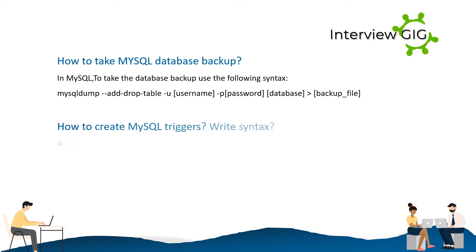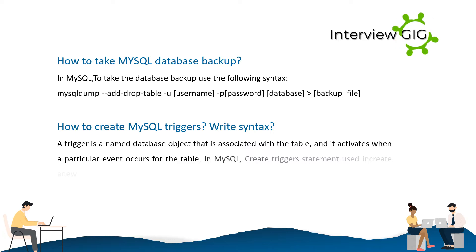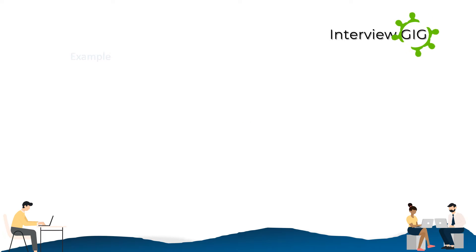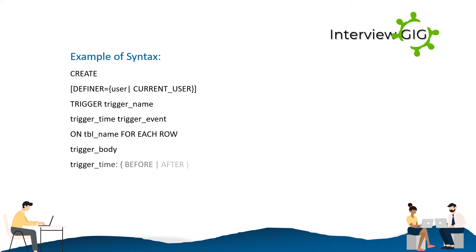How to create MySQL triggers? A trigger is a named database object that is associated with a table, and it activates when a particular event occurs for the table. In MySQL, the CREATE TRIGGER statement is used to create a new trigger. Example syntax: CREATE DEFINER = user | CURRENT_USER TRIGGER trigger_name trigger_time trigger_event ON tbl_name FOR EACH ROW trigger_body.